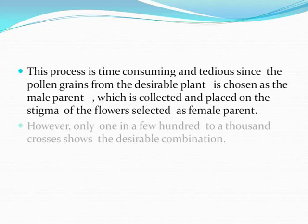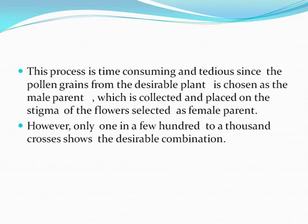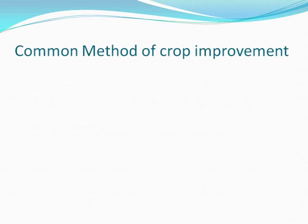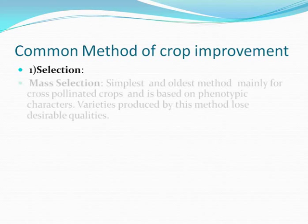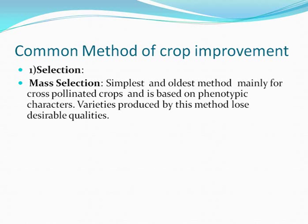However, only one in a few hundred to a thousand crosses shows the desirable combination. Common methods of crop improvement: first is selection. Mass selection is the simplest and oldest method, mainly for cross-pollinated crops and is based on phenotypic characters. Varieties produced by this method lose the desirable qualities over time.